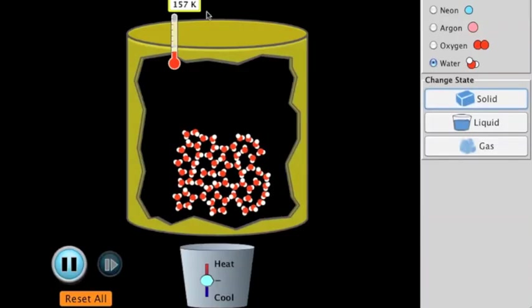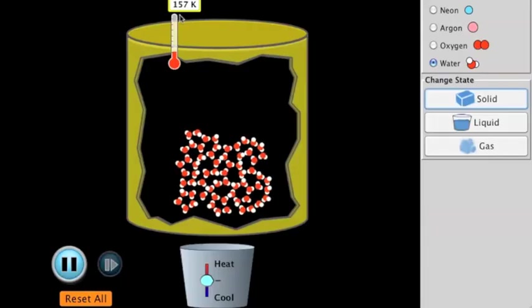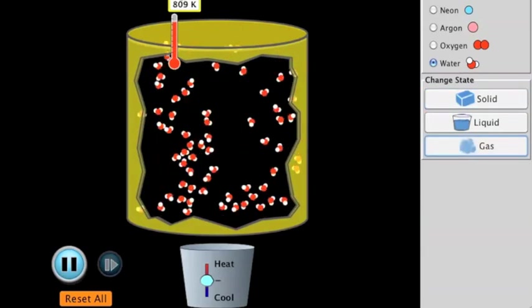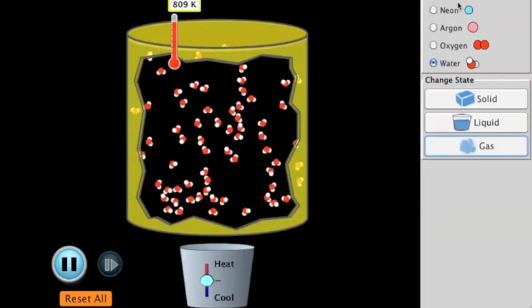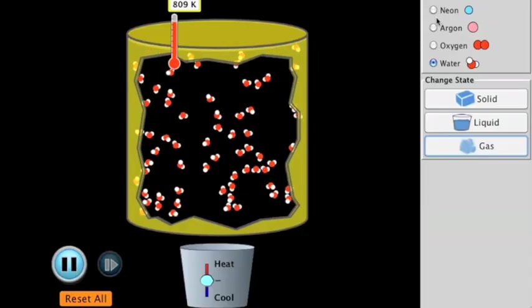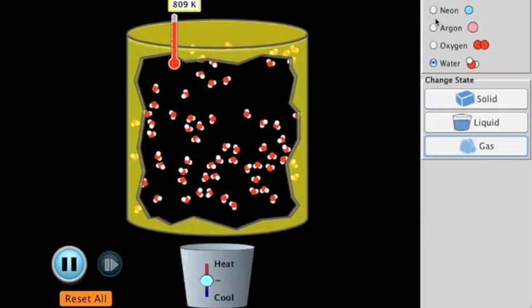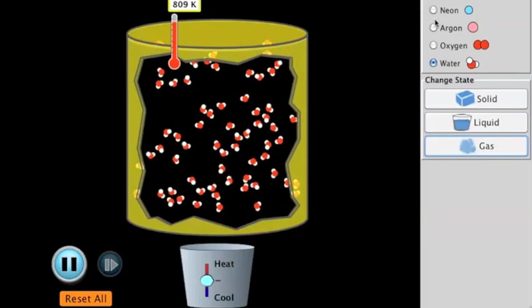If we go back and compare that to our water, the solid state we can get to as warm as 157 degrees Kelvin, and the gaseous state is at 809 degrees Kelvin. Because they're different elements, they're going to have different properties. One of those properties being how they respond to hot and cold temperatures, or to the gain or the loss of energy.